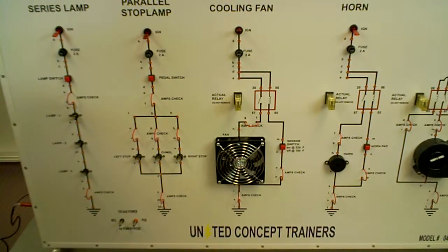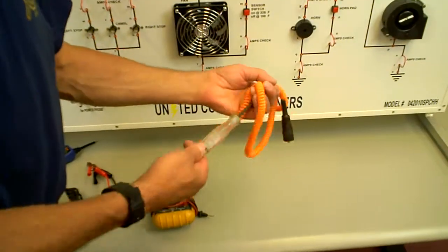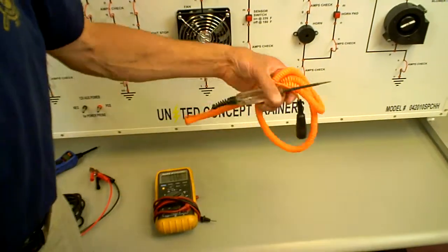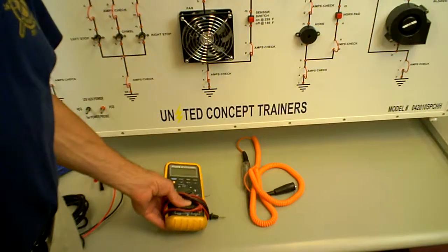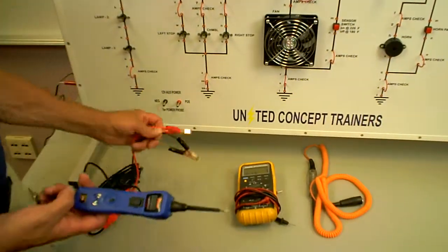Now to diagnose it using the test points, there's a variety of different tools to use: the standard test light, they call it scope on a rope, a digital volt ohm meter, or which is gaining a lot of popularity would be a power probe.